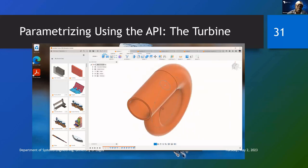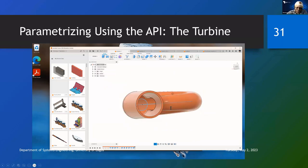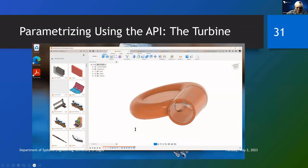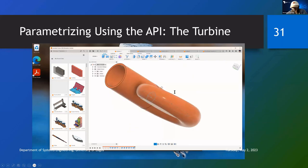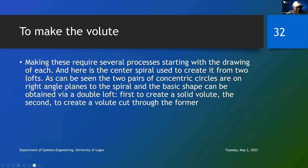Now, what is the theory in this volute? To make a volute, we need to see how to make it. Making this requires several processes, starting with a drawing of each. The center spiral is used to create it from two lofts. The two pairs of concentric circles are on right-angle planes to the spiral, and the basic shape can be obtained via a double loft - first to create the solid volute, second to create a volute cut through the former.